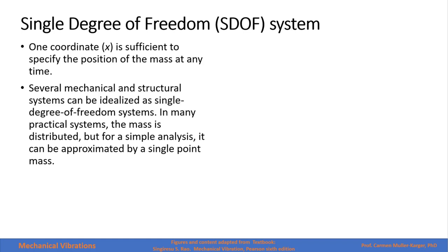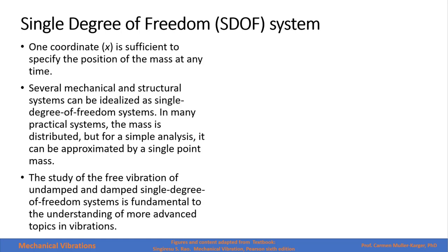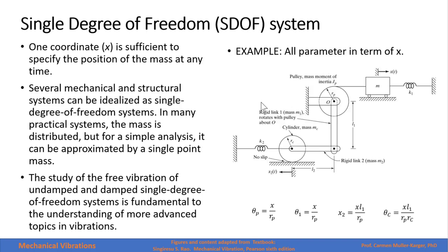Several mechanical and structural systems can be idealized as a single degree of freedom system. In many practical systems the mass is distributed, but for simple analysis it can be approximated by a single point mass. Let's see an example of a system with several masses, bars, and pulleys that has only one degree of freedom — all parameters can be expressed in terms of x, the position of mass 1. As mass 2 moves, it rotates the pulley, and the bar is attached to the pulley.